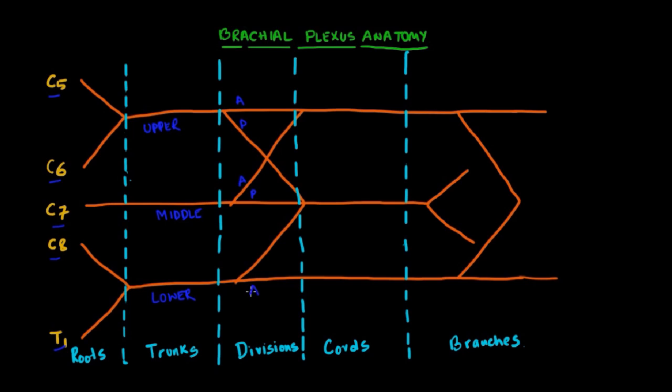C8 and T1 nerve roots combine to form the lower trunk. Now each trunk then divides into its anterior and posterior divisions. So that's pretty simple to remember as well. And all the three posterior divisions come together to form the posterior cord. So that's again easy to remember. While the anterior divisions of the upper and the middle trunk form the lateral cord, the anterior division of the lower trunk continues downwards as the medial cord.